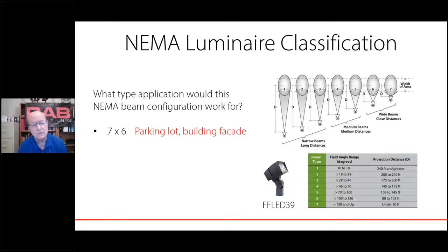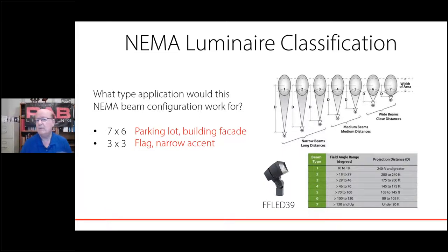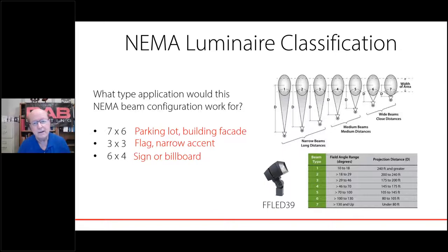The 7 by 6 is the most popular NEMA beam configuration sold today — in fact, over 50% of floodlights sold are 7 by 6. That means a 7 is over 130 degrees horizontally and the 6 is 100 to 130 degrees; you might see that on a parking lot or building facade. A 3 by 3 is much more narrow — maybe for a narrow accent like a flag. And a 6 by 4 makes sense to light a rectangular shape like a sign or a billboard.